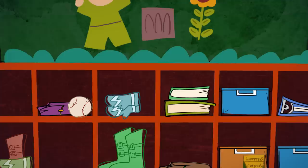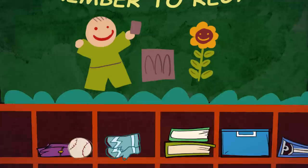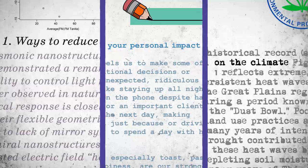In first grade, above the cubbies where we kept our snow boots and mittens, big Comic Sans letters spelled out 'remember to recycle' and 'last one out turns off the light.' These are the kinds of things recommended by science textbooks, blogs, and even the US Environmental Protection Agency as ways to reduce your personal impact on the climate.